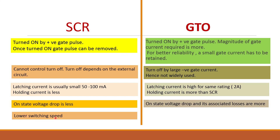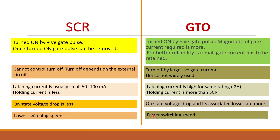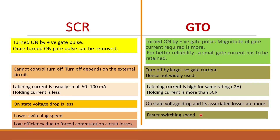SCRs are used only at low switching speeds, whereas GTOs have a comparatively higher switching speed of around 1 kilohertz. SCR has lower efficiency because it needs a commutation circuit to turn off, whereas GTO has lower losses and higher efficiency.